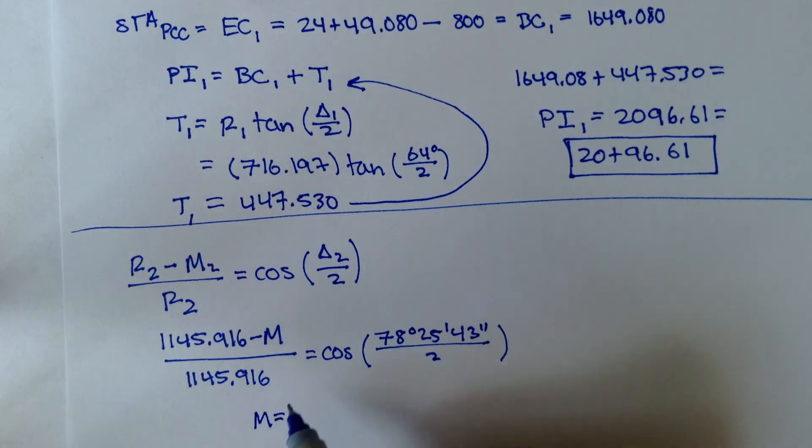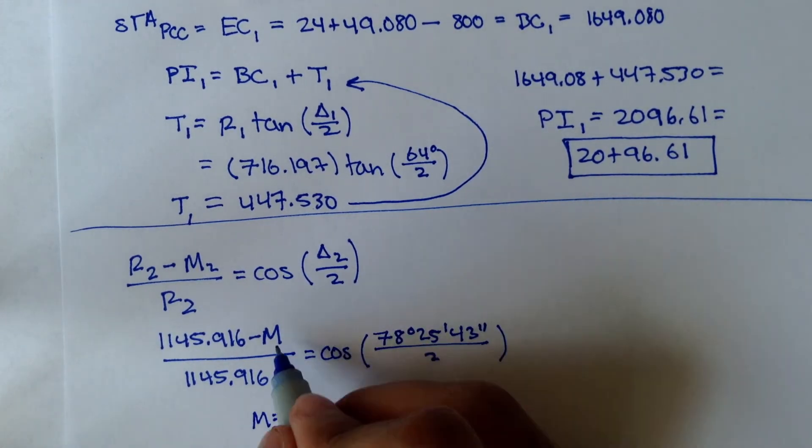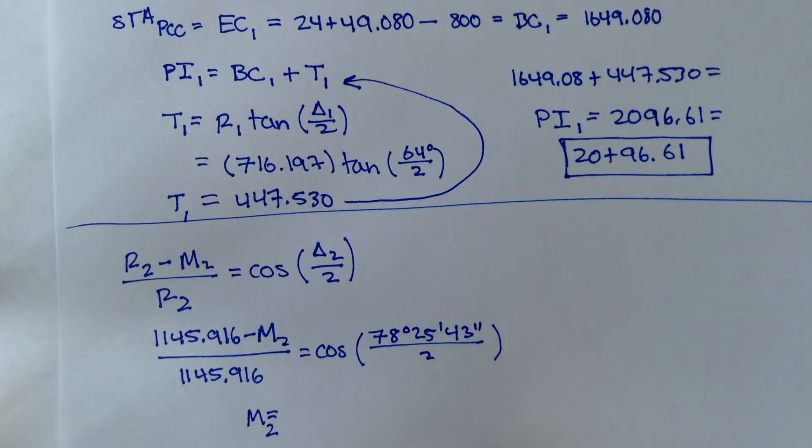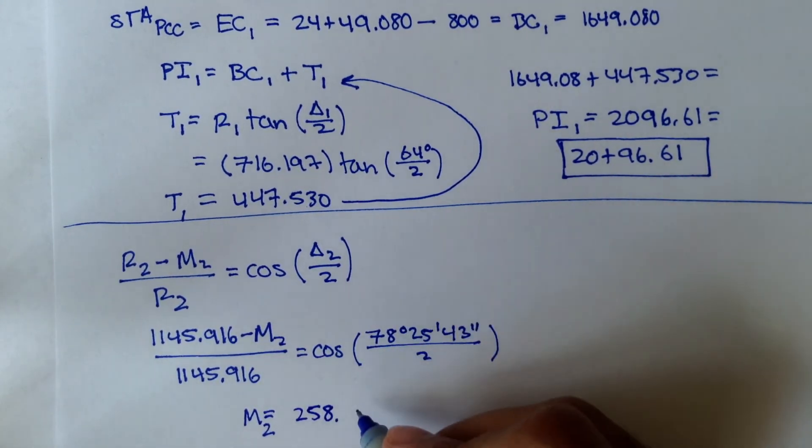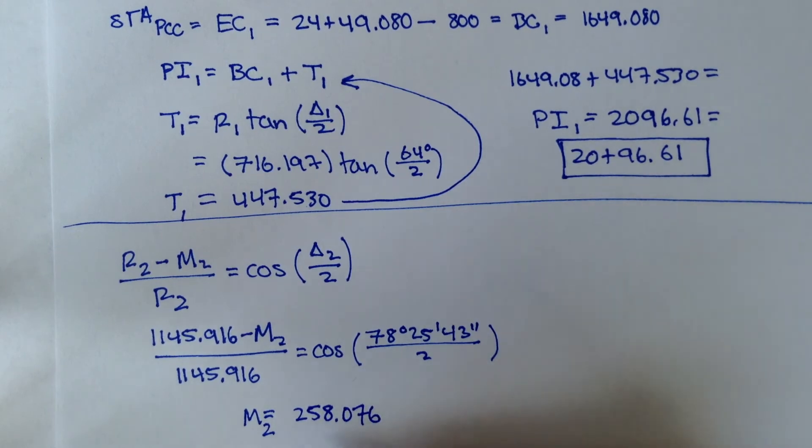So we just plug all this in, solve for M. M should be, or the middle ordinate for curve 2, after plugging this in, should be 258.076.